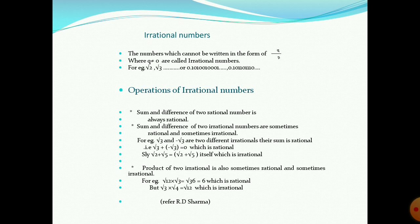For example, root 3 and minus root 3 are two different irrational numbers. When we add these two irrational numbers, we see that the result is 0, which is a rational number. That is, root 3 plus minus root 3 is equal to 0. But if root 2 is added with root 5, the result remains irrational. Therefore, the sum and difference of two irrational numbers are sometimes rational and sometimes irrational.